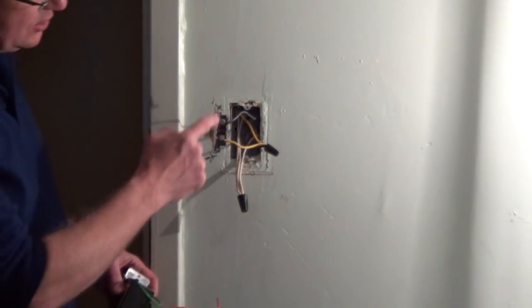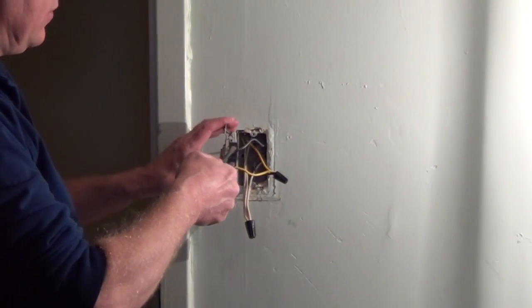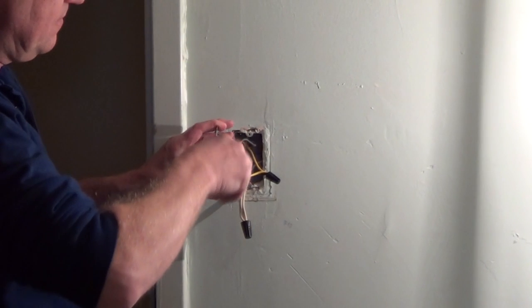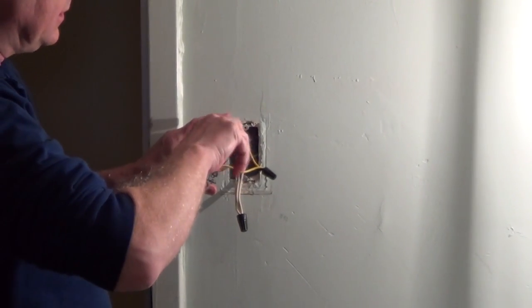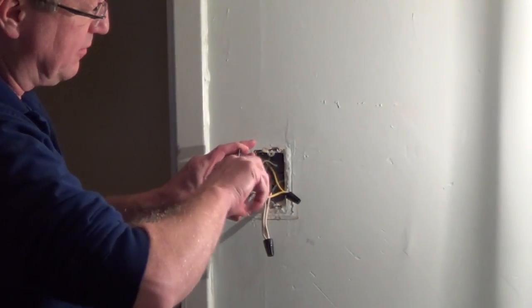So I'm going to unscrew these two screw terminals and the thing with a motion detector is we need to identify which wire is coming from the service panel and then which wire is going up to the light or group of lights.